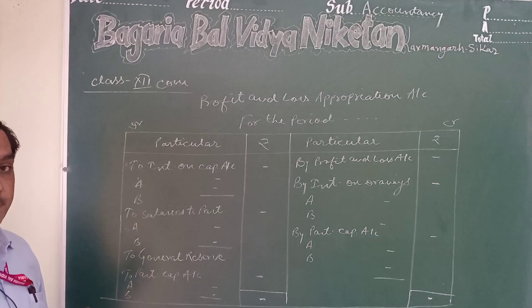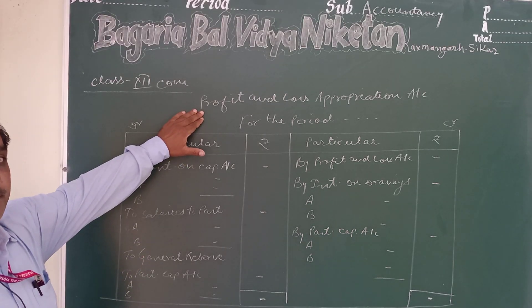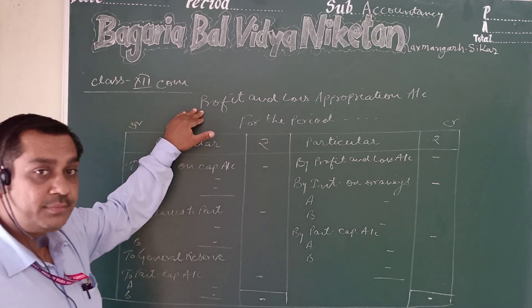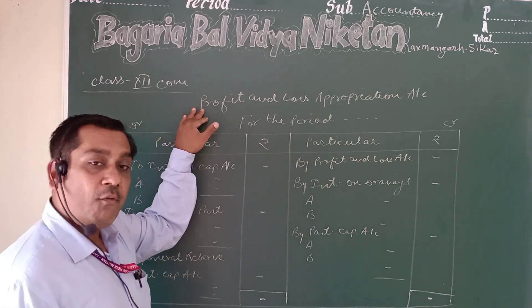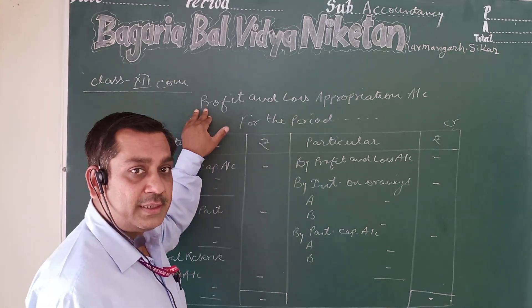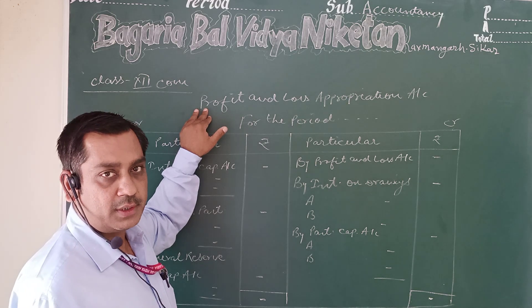In accounting treatment, the first step is to prepare the Profit and Loss Appropriation Account. The Profit and Loss Appropriation Account is the extension of the Profit and Loss Account.